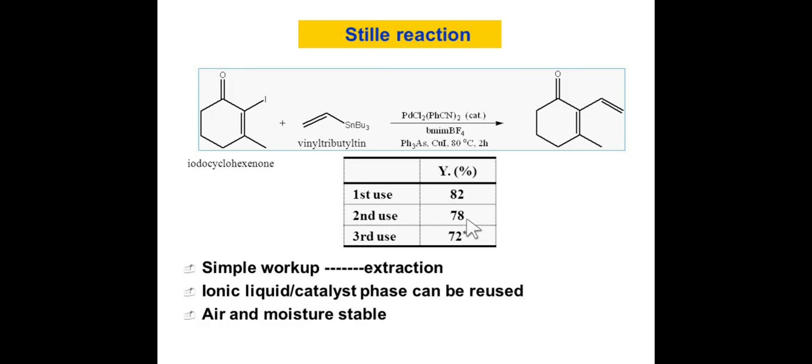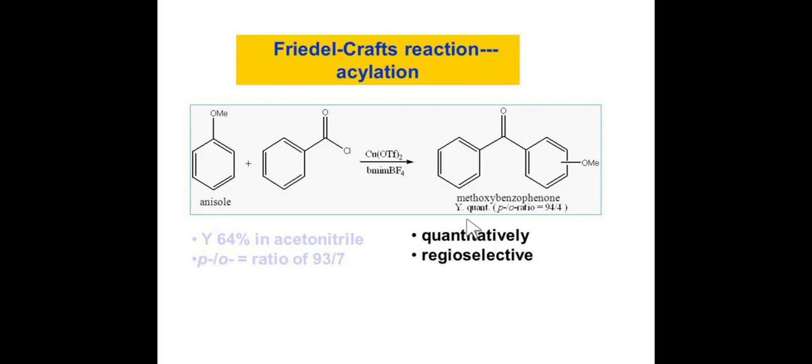The next reaction is very well known: Friedel-Crafts reaction or Friedel-Crafts acylation. If we use copper triflate and ionic liquid, we can easily convert this reactant into ketone. This is typical Friedel-Crafts reaction of anisole with benzoyl chloride and we get this kind of ketone. The use of ionic liquid gives us quantitative yield, almost 100%, and the regioselectivity is very high for the Friedel-Crafts reaction.